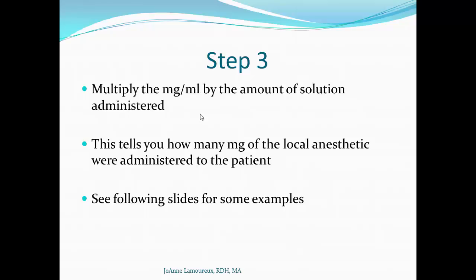The next step is to multiply the milligrams per milliliter by the amount of solution given. You figure out how many mL you gave, determine the mg/mL, multiply the two together, and that tells you how many milligrams of local anesthetic you gave to the patient. I'll take you through a few examples to make sure you understand.